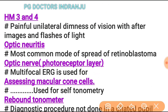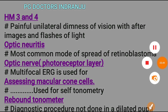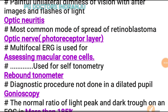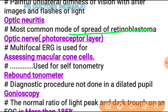Painful unilateral dimness of vision with afterimage and flashes of light is optic neuritis. The most common mode of spread of retinoblastoma is via the optic nerve, and in the optic nerve it spreads through the photoreceptor layer.